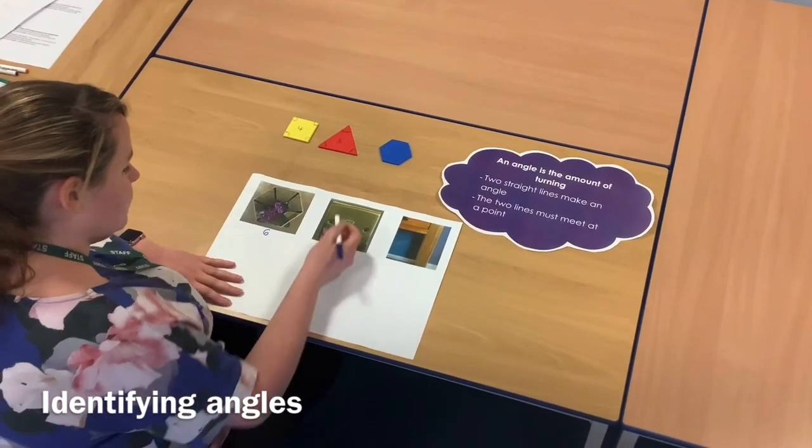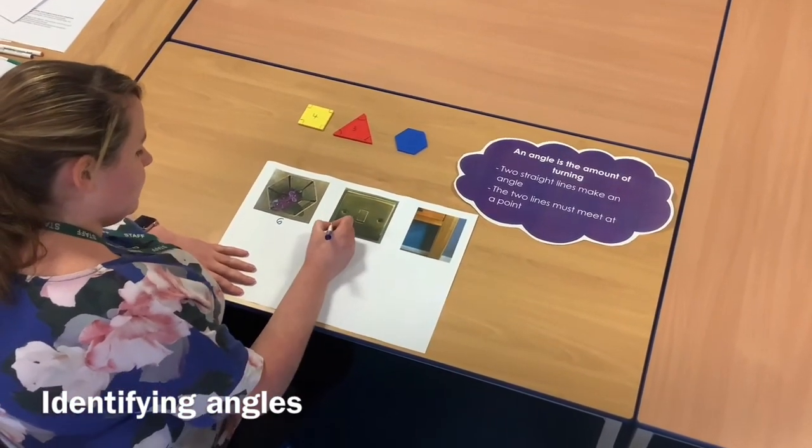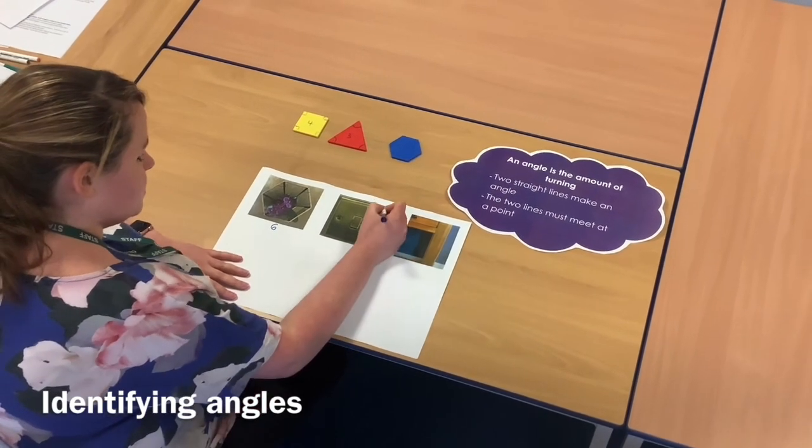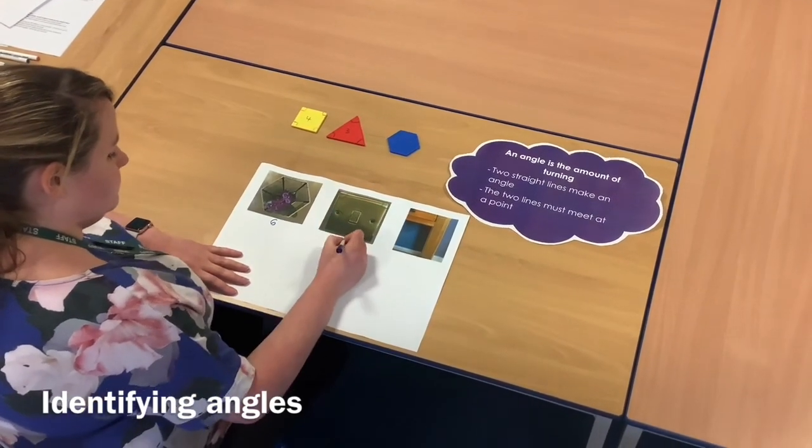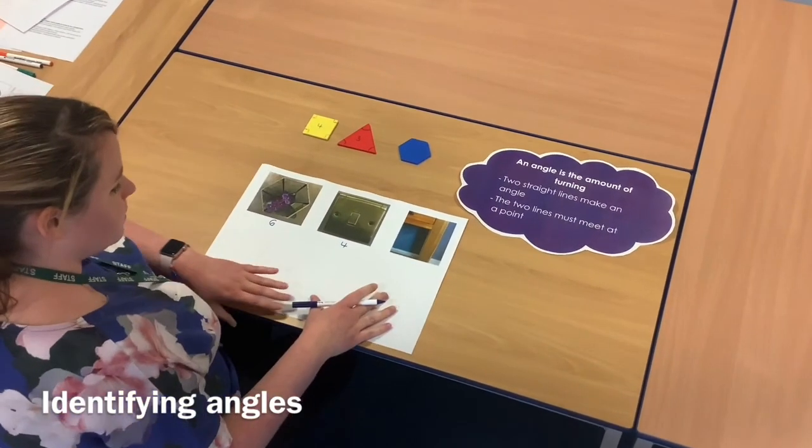I've got a light switch here. So I've got my straight edges. Where do they meet? I've then got my angles, three, four. So square, once again, four angles here.